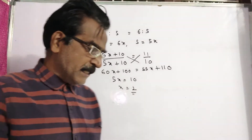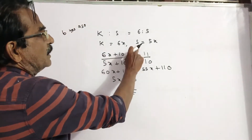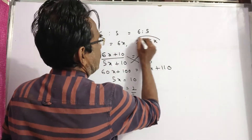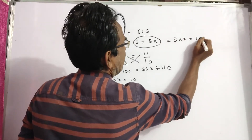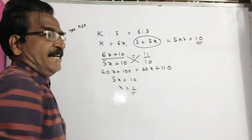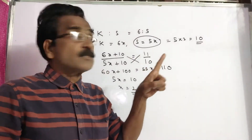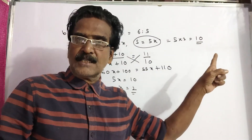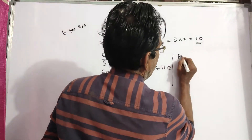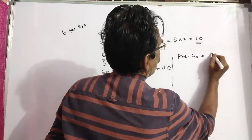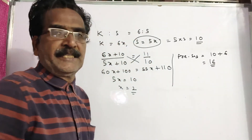X is equal to two. Now, what is the question? What is Sagar's present age? Sagar's age six years ago was 5X, which equals five into two, that is ten years. Six years ago, Sagar was ten. So the present age of Sagar is equal to ten plus six, which is sixteen years. This is the present age of Sagar.